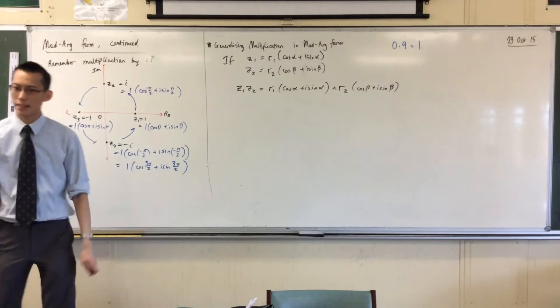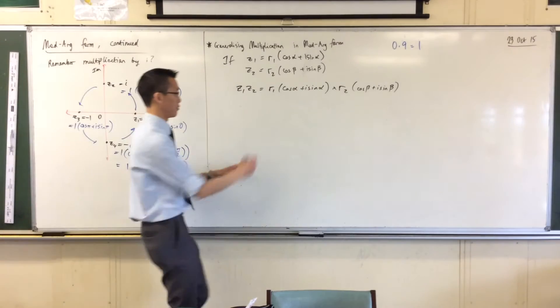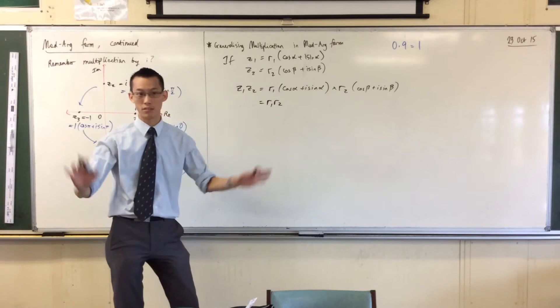Now, the first immediate thing you see is, what happens to the moduli? You just multiply them. You just get R1 and R2 just hanging out the front, doing their thing. No big deal.